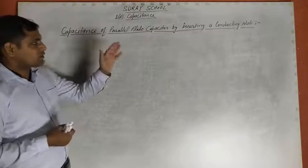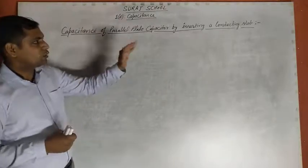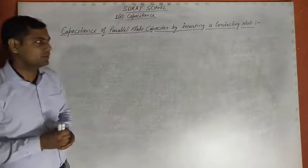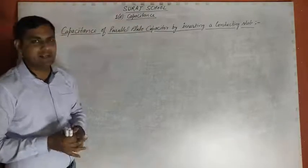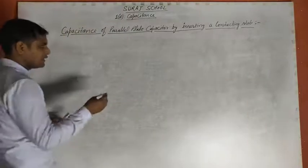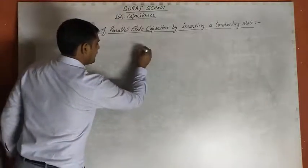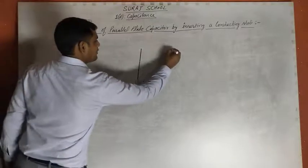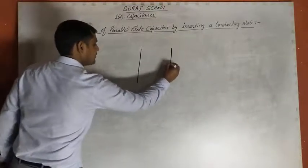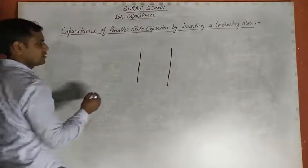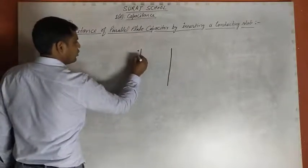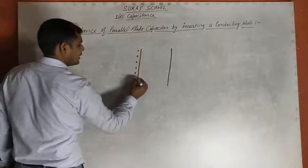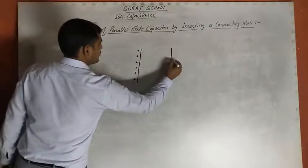In the last video, we discussed that if you place any medium between the plates, the capacitance always increases. Today's topic is the conducting slab. If we place two plates — this plate is positively charged, this plate is negatively charged — between the two plates there will be an electric field directed from positive to negative.